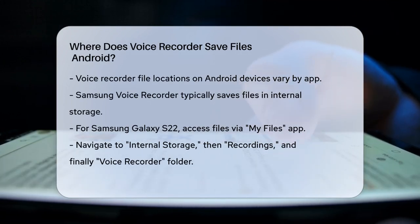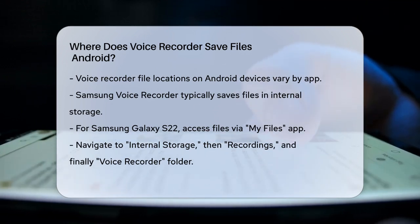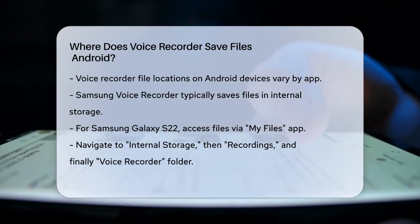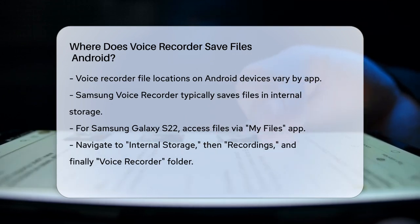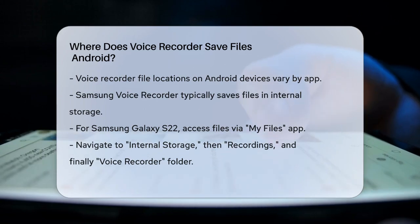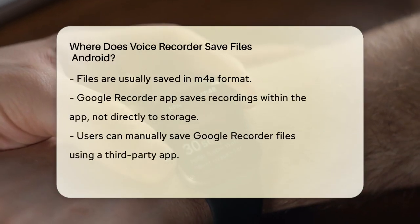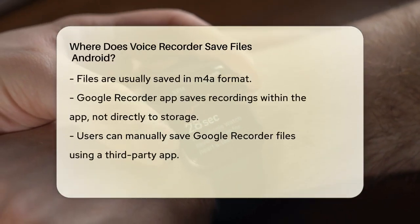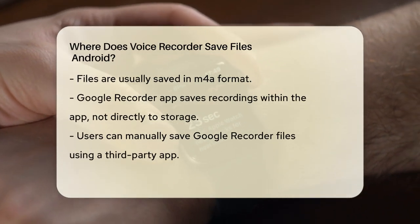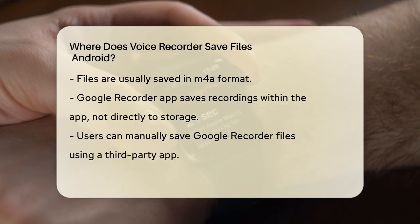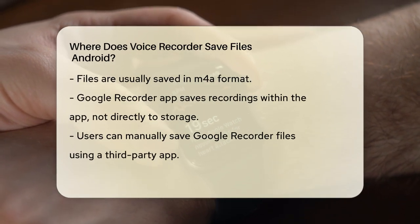For the built-in Samsung Voice Recorder, the files are typically stored in the internal storage of your device. On a Samsung Galaxy S22 series, for example, you would go to the home screen, swipe up to access the app screen, open the Samsung folder, and then open the My Files app. Inside My Files, navigate to internal storage, then to the recordings folder, and finally to the voice recorder folder. This is where all your voice recordings are stored in the M4A file format.